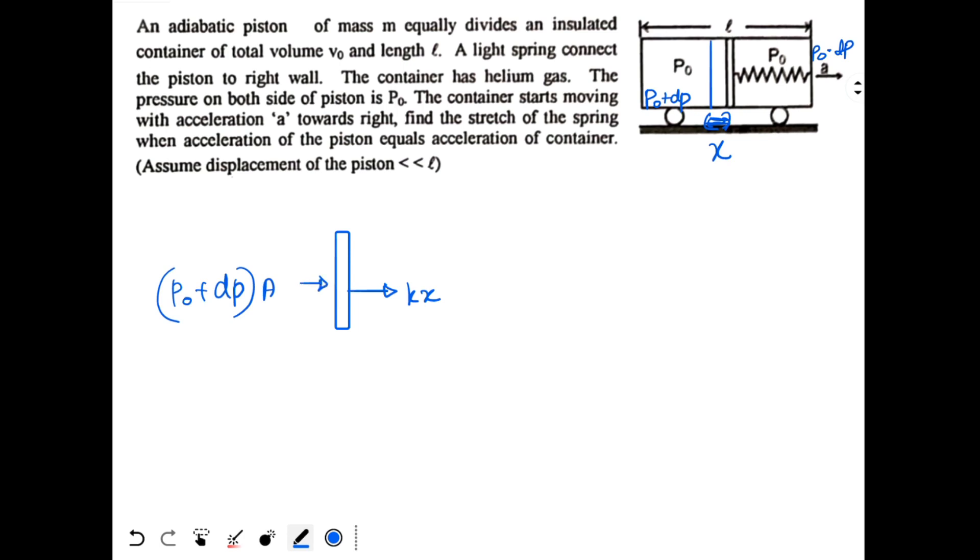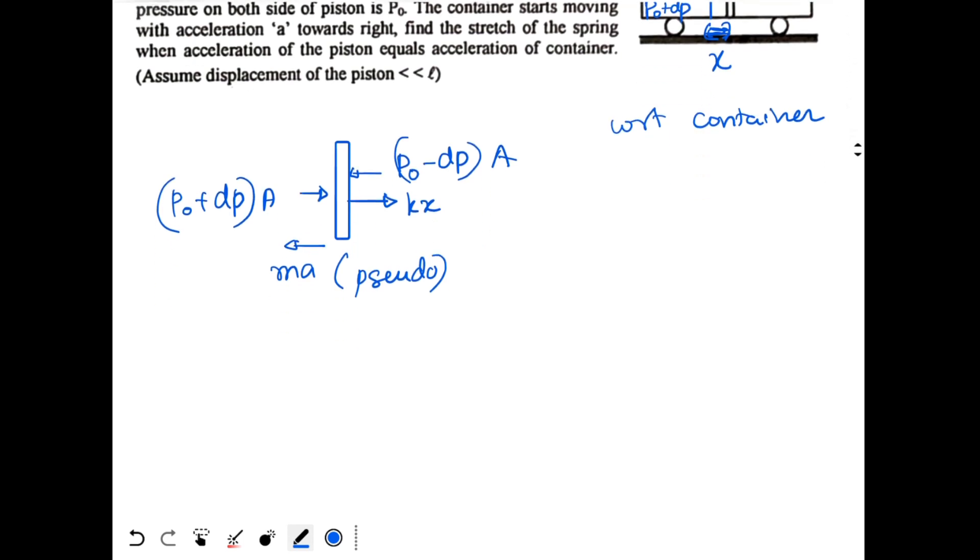Then we have P0 minus DP times area, force will be acting in opposite direction. And with respect to container if we look at the system, we have a pseudo force Ma acting backwards. So the net force should become 0. So Kx plus P0 a plus DP a should be equal to Ma plus P0 a minus DP a.